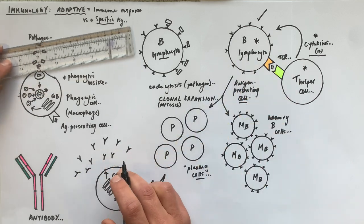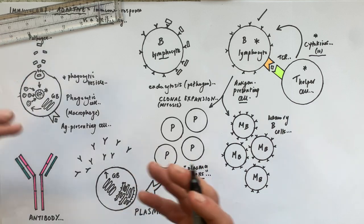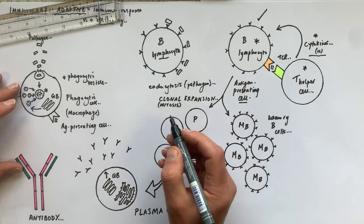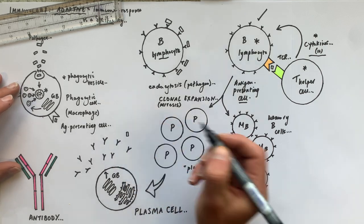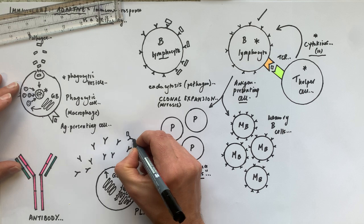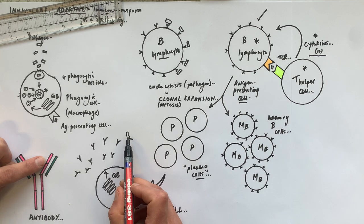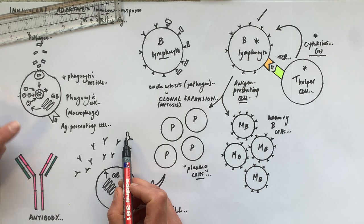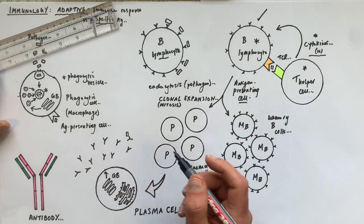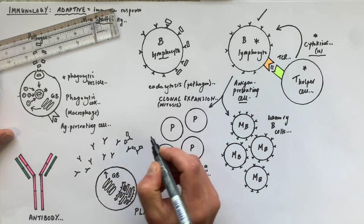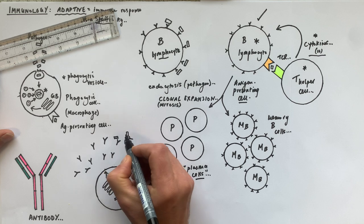The role of the antibodies is to agglutinate the pathogen and clump them together at the infection site to localize the infection. The tip of the Y-structure of the antibody is called the antigen-binding site, which is complementary in shape to the antigen on the surface of the pathogen. It binds to form an antibody-antigen complex and agglutinates the pathogen.